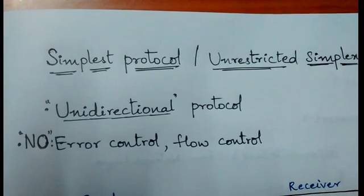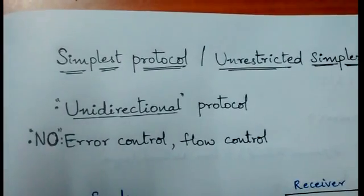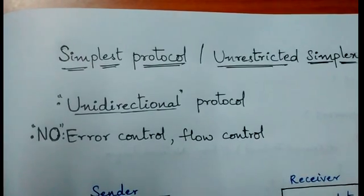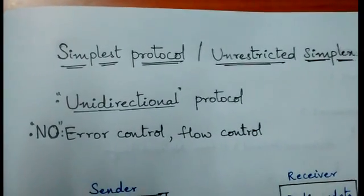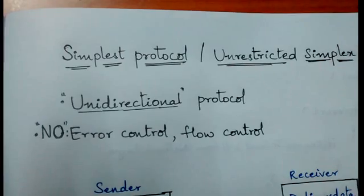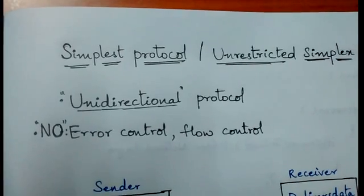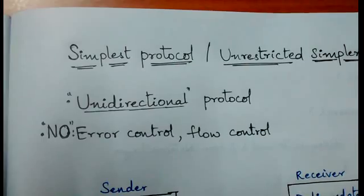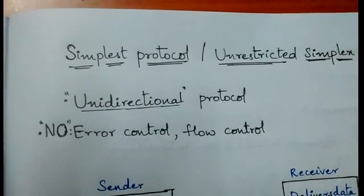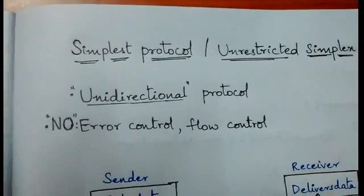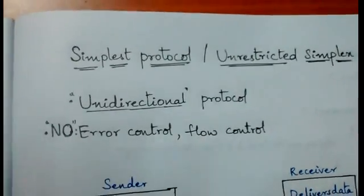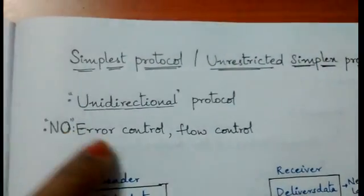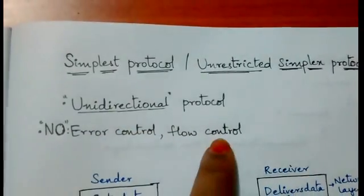Simplest protocol or unrestricted simplex protocol is for noiseless channels. In noiseless channels, it is assumed that there is no loss of frames, duplication, or corruption — that is, it is assumed that there is no error in sending the data. Simplest protocol is a very simple and unidirectional protocol with no error controls and no flow controls.